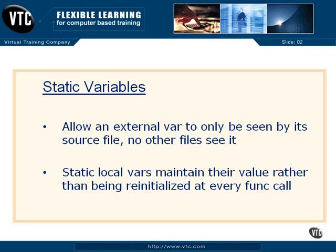If you make an external variable static — for example, 'static int x' declared outside any function definition — a static external will only be seen by its own source file. None of the other files will get to see it. If there are multiple externals and one is static and one is not, they will actually be in different places in memory. The static external in a source file will only be visible within that source file.